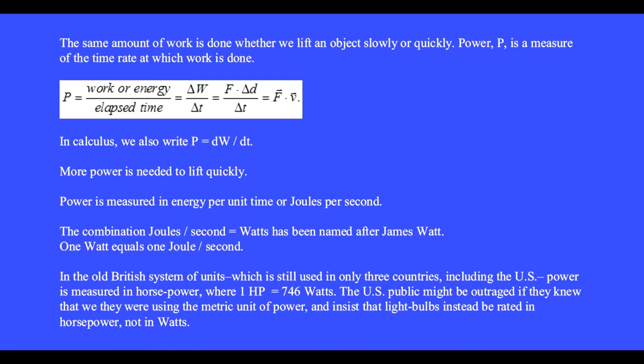Work occurs when we apply a force through a distance. If the force is constant, then we have F dot delta D over delta T. But the combination delta D delta T is velocity, so power can be written as the dot product of the force and velocity vectors. In calculus we also write power equals the time derivative dW dt.